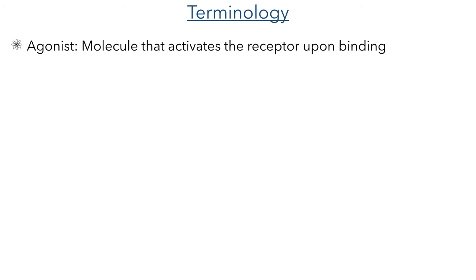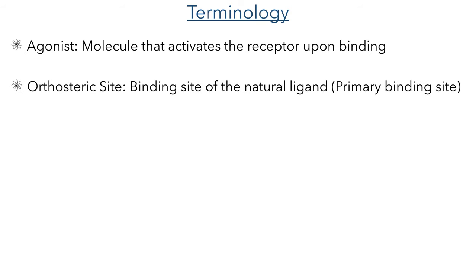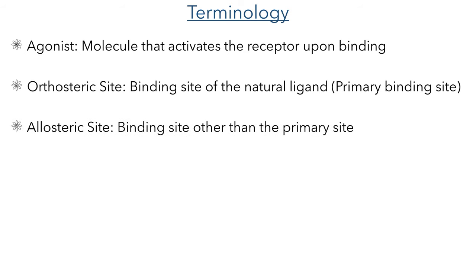Before we move further, let me explain some of the terminology we will be using in this video for those who aren't familiar with pharmacology. An agonist is a molecule that activates a receptor upon binding. This will typically happen at the orthosteric site, which is the binding site of the natural ligand for that receptor, sometimes referred to as the primary binding site.